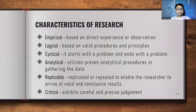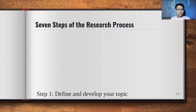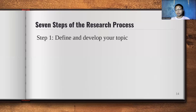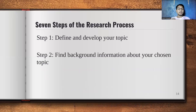Next are the seven steps of the research process, which will serve as a summary of the whole research subject. First is defining and developing your topic. Here, you observe your surroundings, look for situations and problems around you, analyze them, and once you've chosen your topic, gather related studies and articles to build a strong foundation for your research.